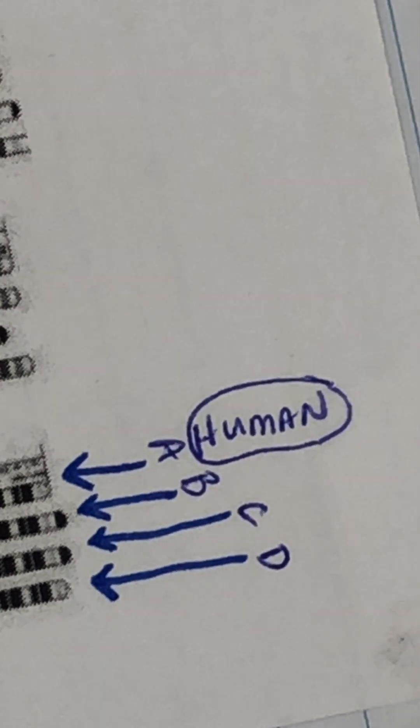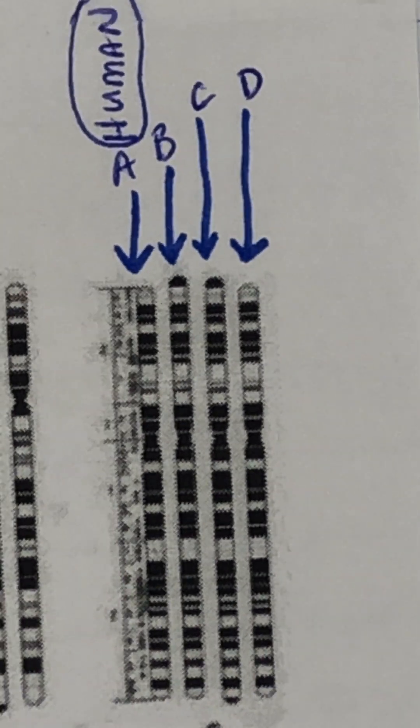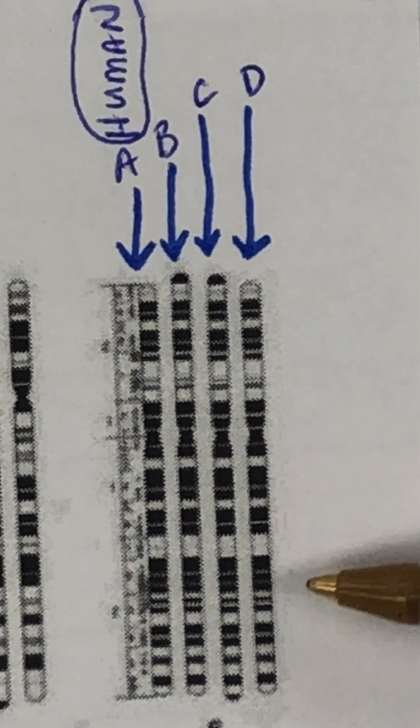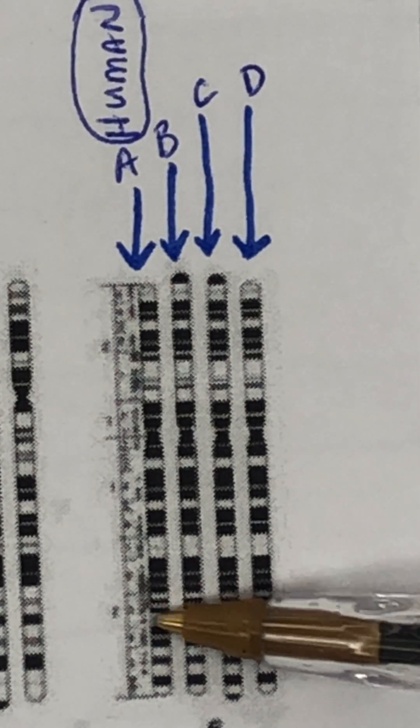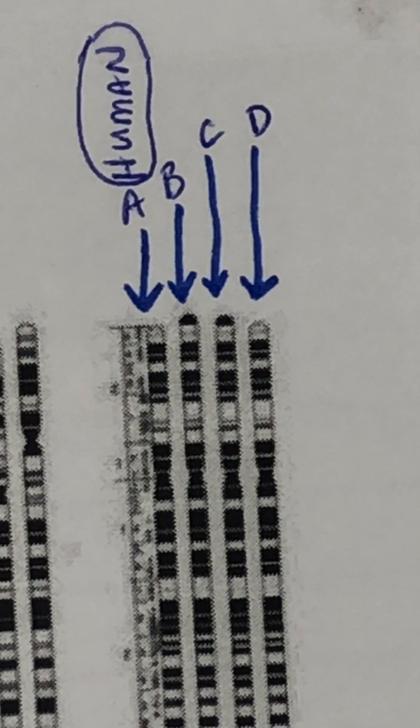So organism A is a human. Can you think of who might be so genetically similar to us that our chromosomes are almost exactly identical—not exactly identical but really similar? Think about that and I'll share the answer with you on Monday.